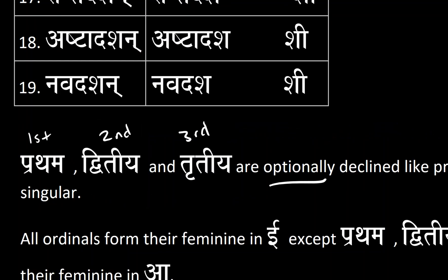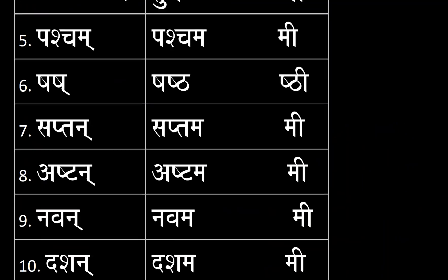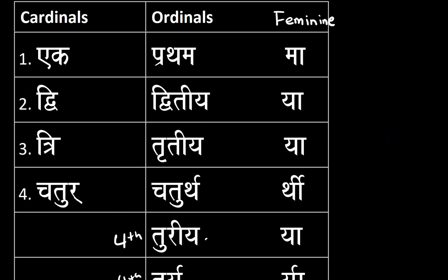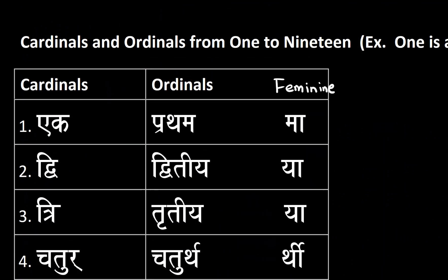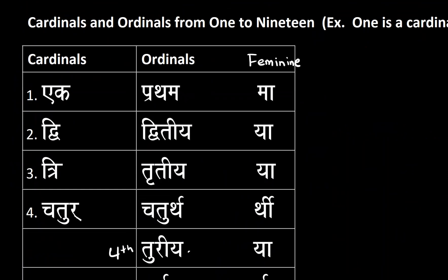So these are all of the ordinals — first, second, third, fourth, fifth, all the way up to the nineteenth. The cardinals, such as Eka, Dvitiya, Tritiya — one, two, three, four, five, six, seven, eight, nine, ten — the pronunciation of those would be found in the previous video. But these are all of the ordinals we just went over, first through nineteenth. And with that, this is your Sanskrit instructor signing off with a Namaste.